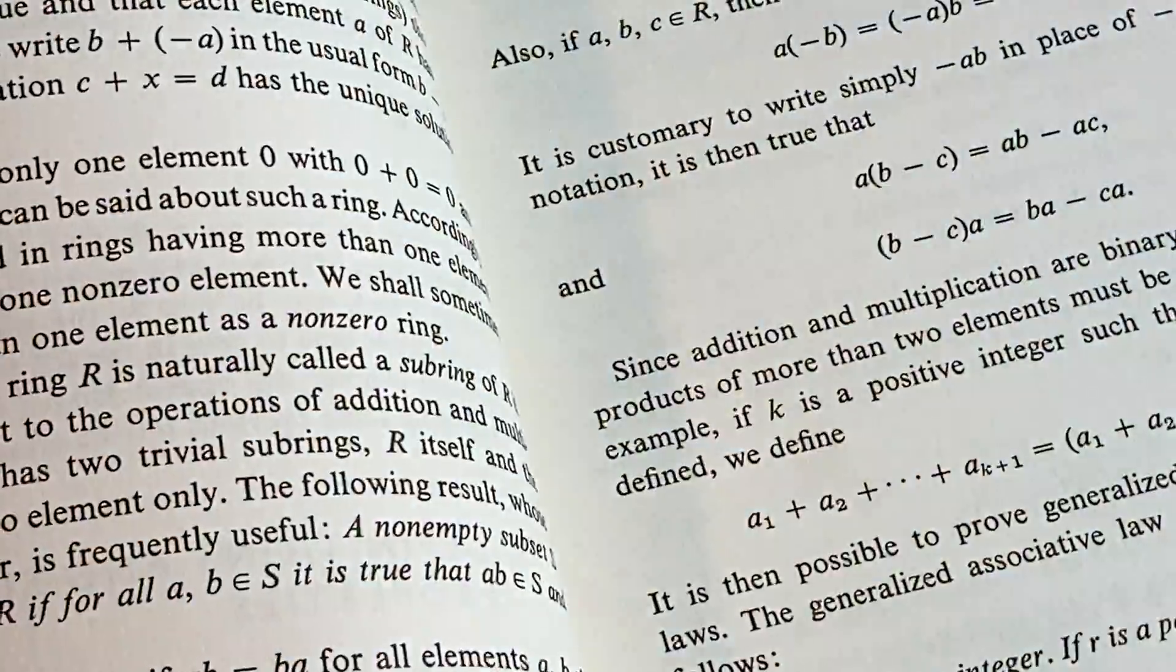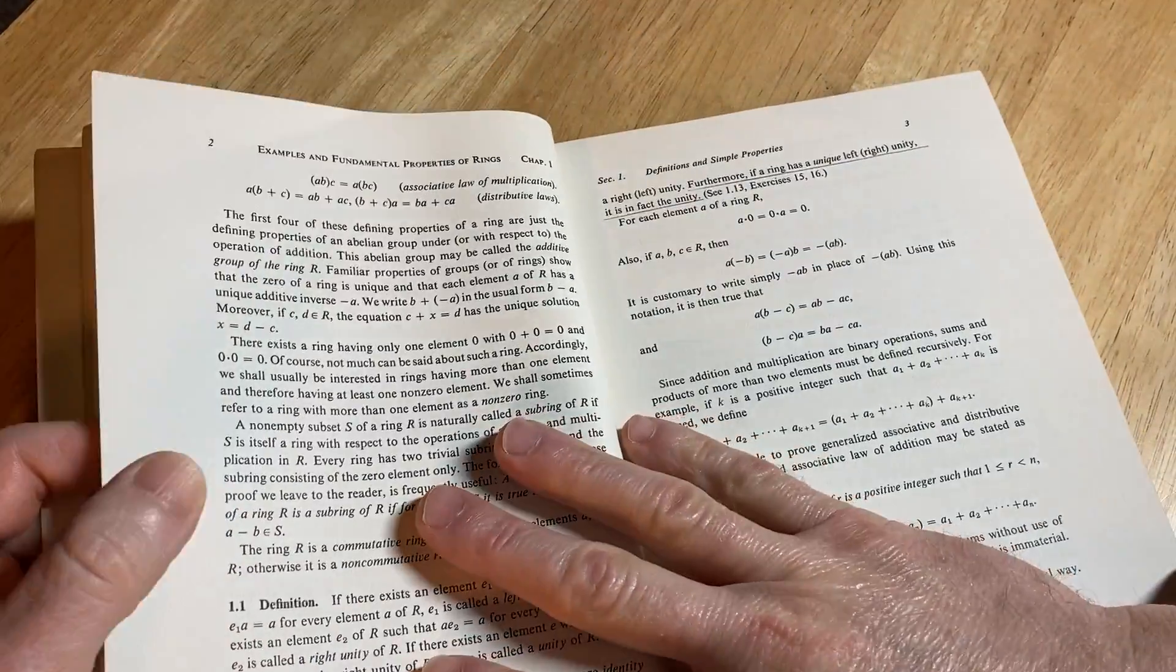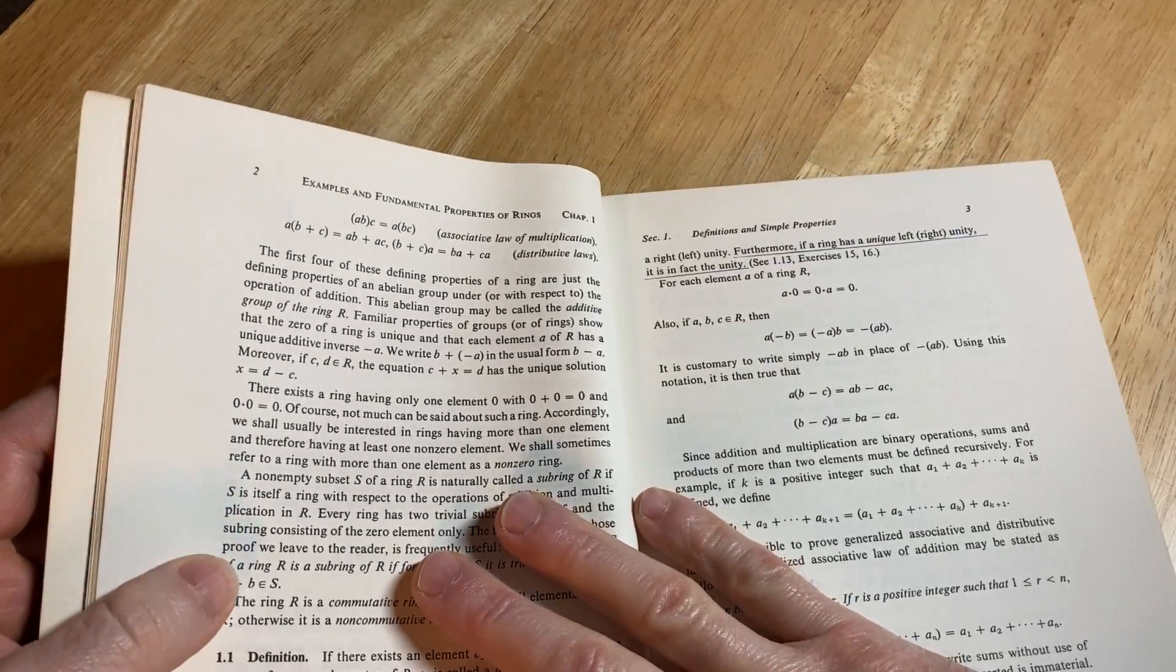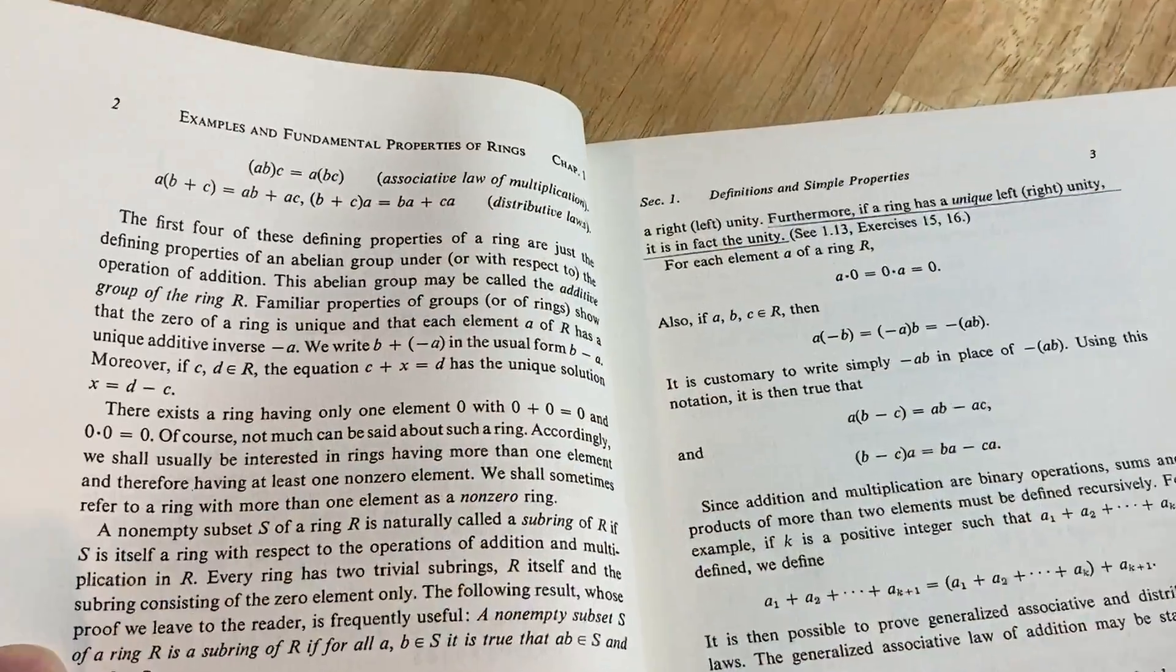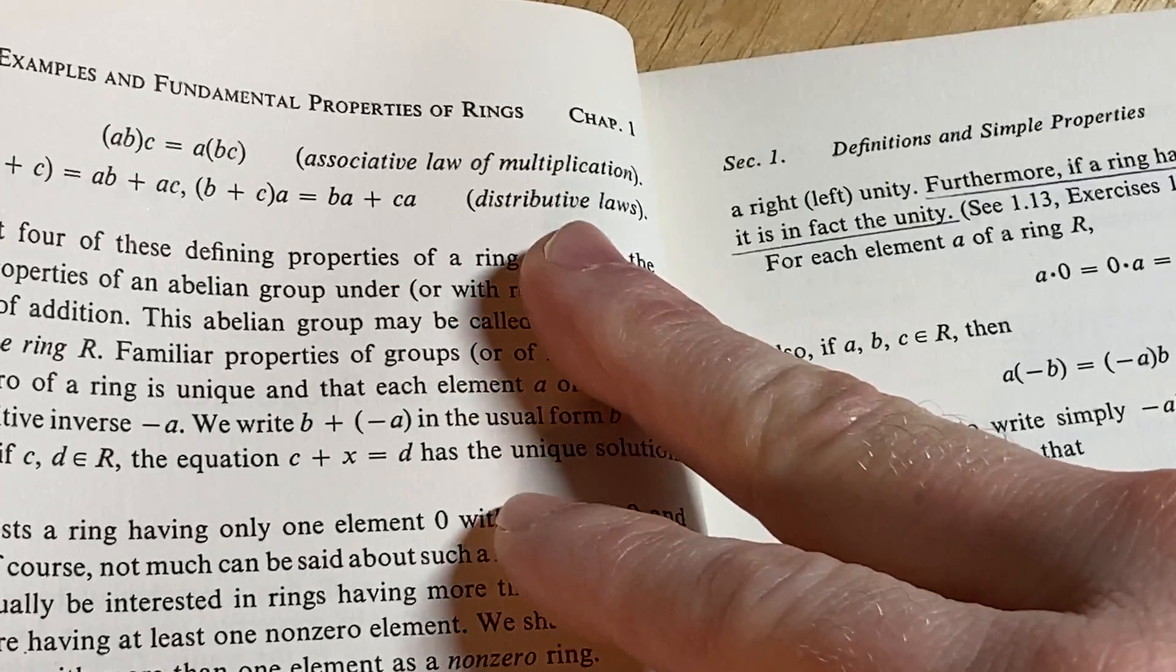So you have an identity element on addition, that's what that's called, okay, and every element has an inverse, additively, and then you have associativity, the multiplication, and then distributivity.